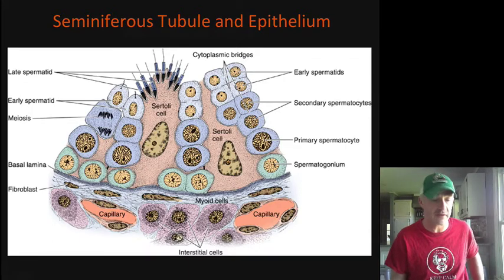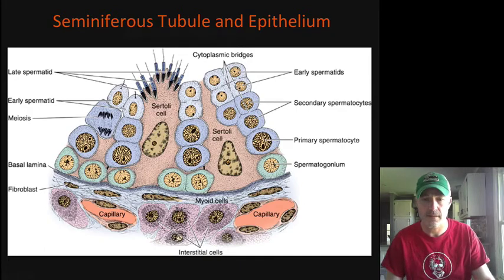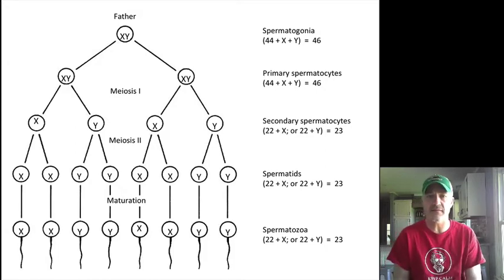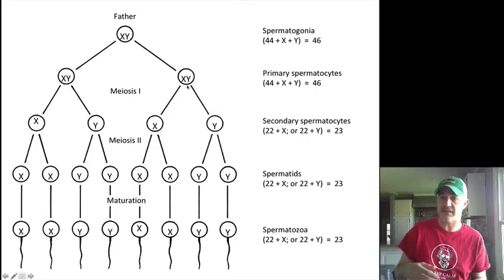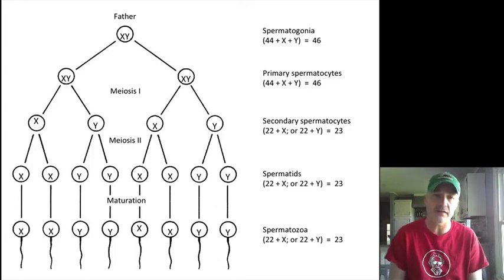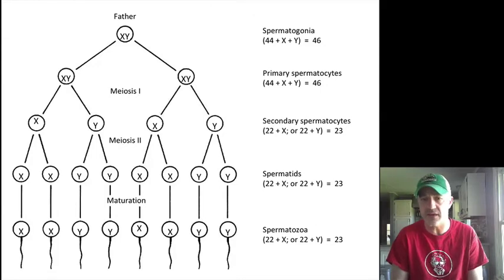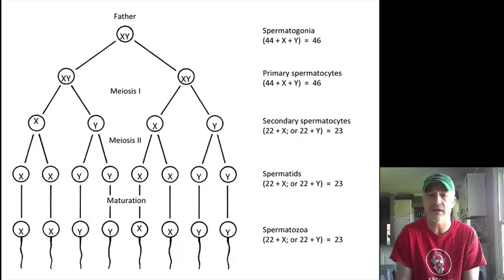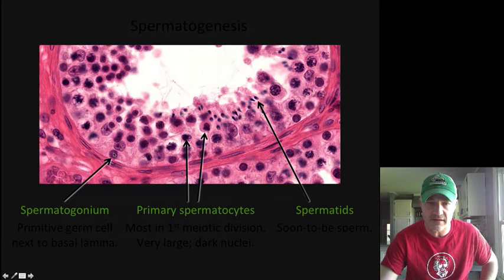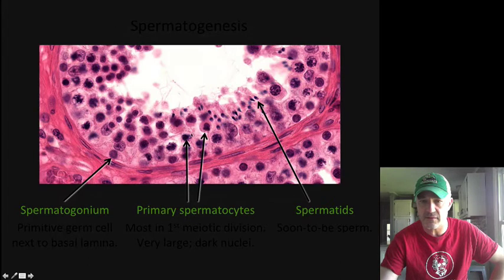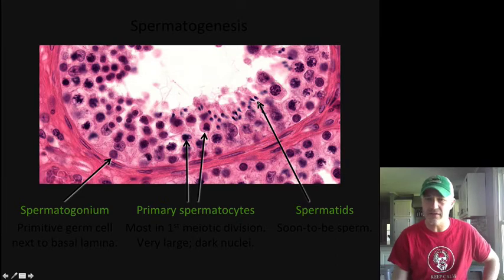What is a little different versus the female is that the male sex cell is essentially genetic material strapped to a motor with an engine. In the female, one primary oocyte gives one functional sex cell. In the male, one primary spermatocyte gives four functional spermatozoa, which means far larger numbers of functional spermatozoa from each stem cell. In a normal ejaculation you're looking at somewhere around 200 million spermatozoa. You can see the spermatogonium at the surface, the primary spermatocytes working their way down, and the spermatids on the interior.